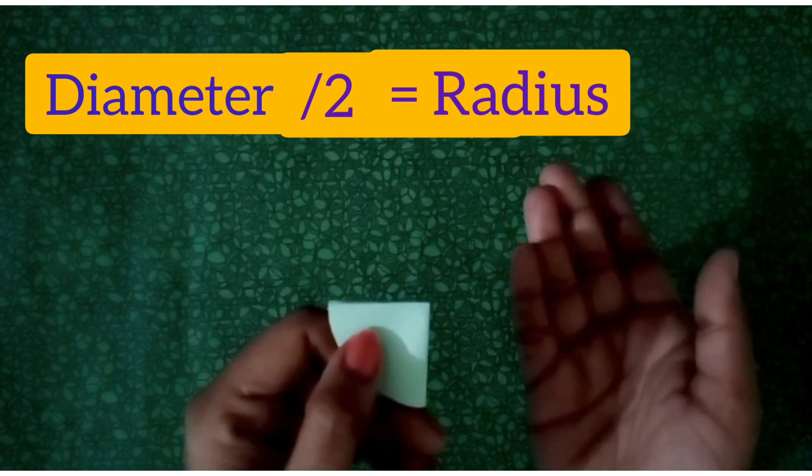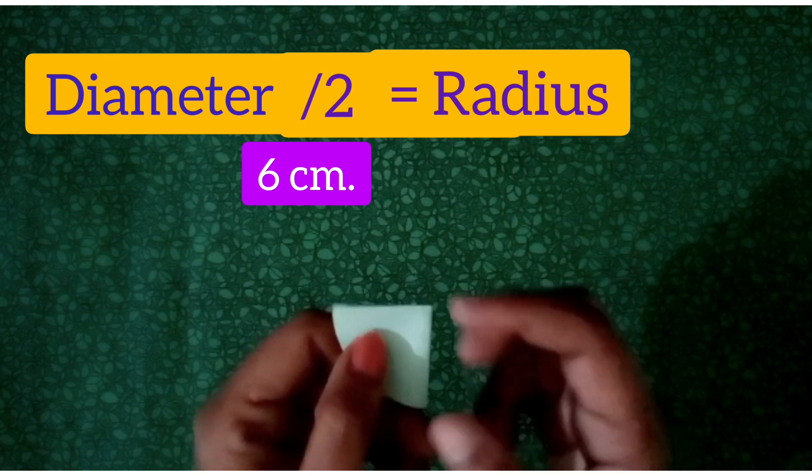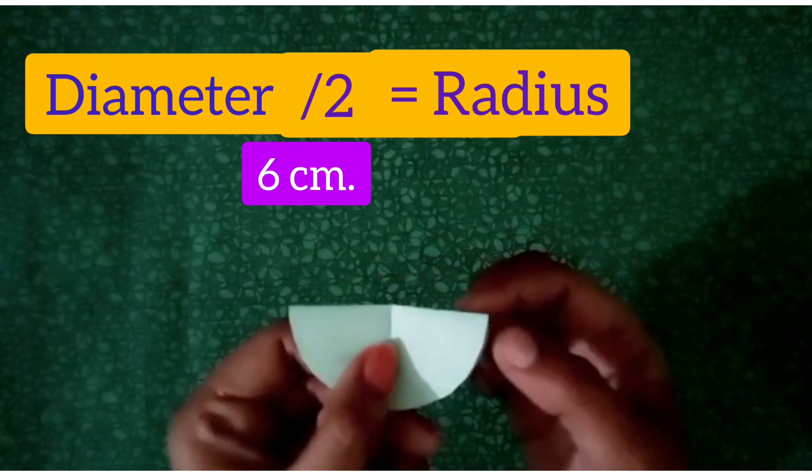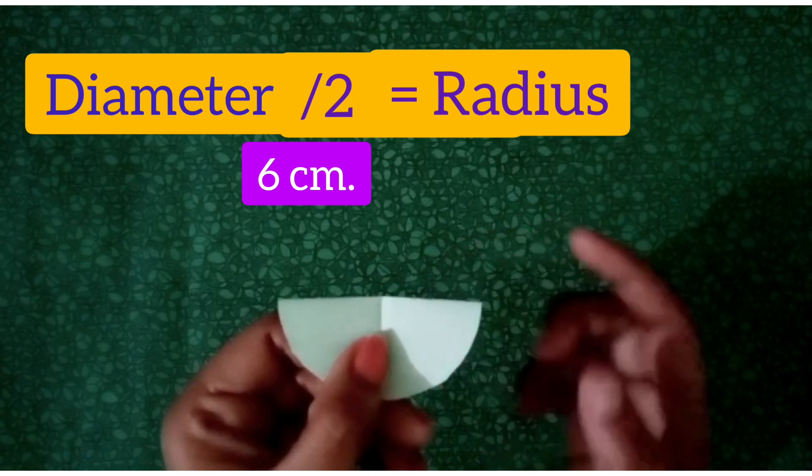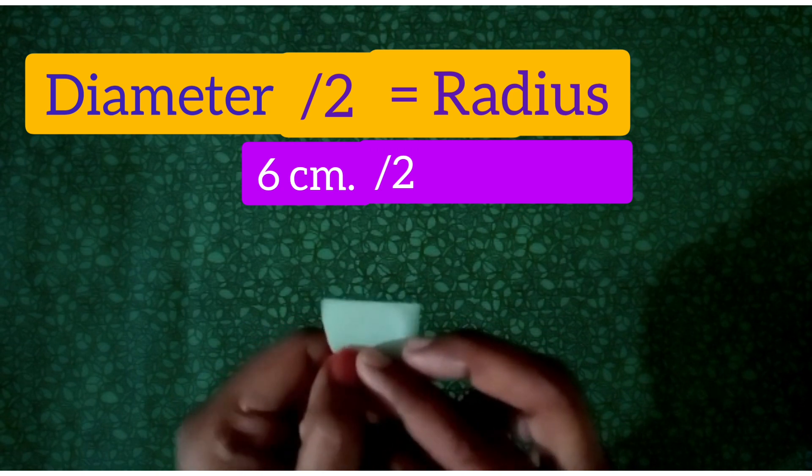Students, if diameter of this circle is 6 centimeter, then what will be its radius? So think and tell? Yes, right you are. The radius will be 6 divided by 2, 3 centimeter.